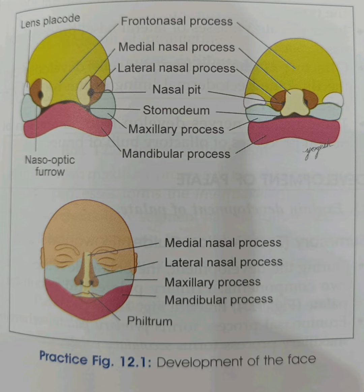The philtrum of the upper lip is derived from the medial nasal process. The lateral parts of the upper lip are derived from bilateral maxillary processes. Lateral nasal processes do not form the upper lip. The ectoderm skin of the maxillary processes overgrows and covers the central part — the philtrum — of the upper lip.